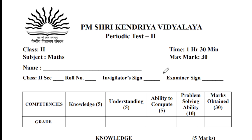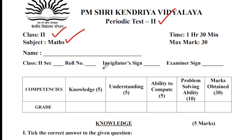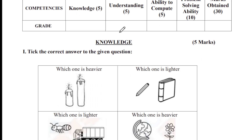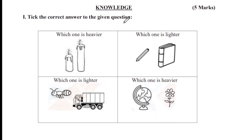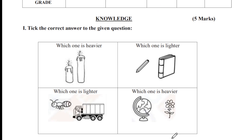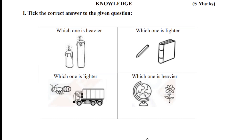Hello, my wonderful students. Very good morning. Today we are going to see the periodic test question paper for Class 2. The subject is mathematics. Total marks is 30 marks — I want everyone to score 30 marks. If you receive this question paper through email, it will be very easy for practice. I'll tell you how to join the channel in the middle of the video.